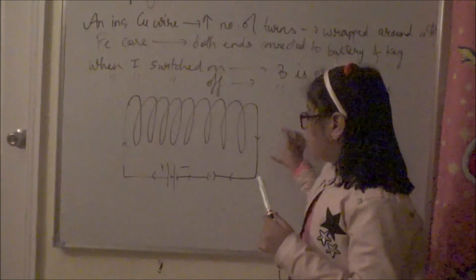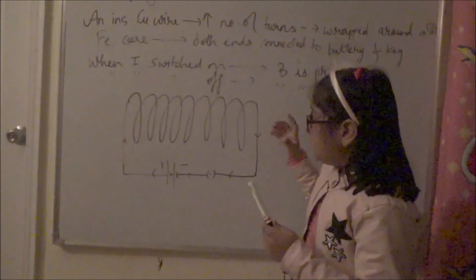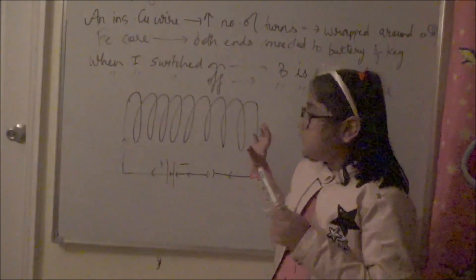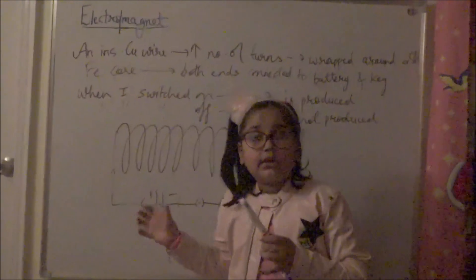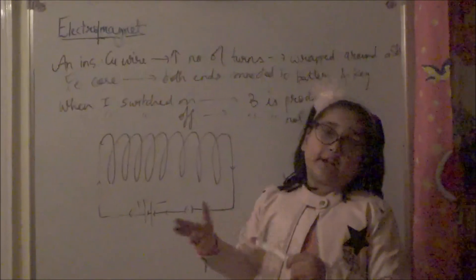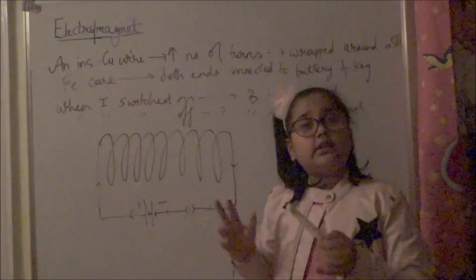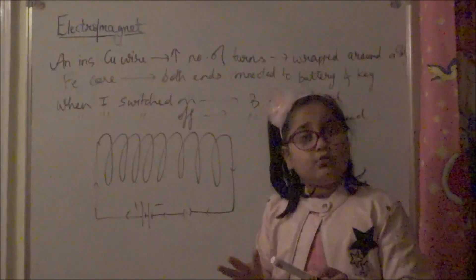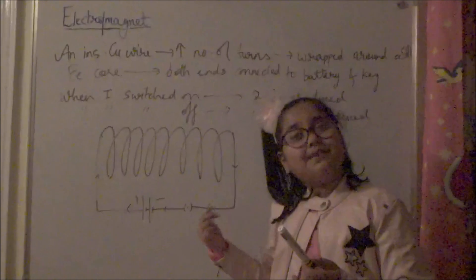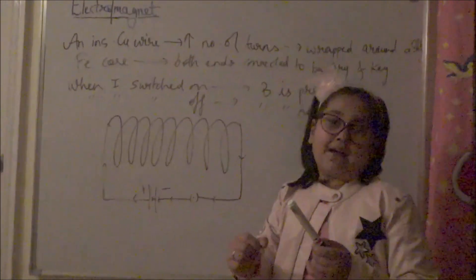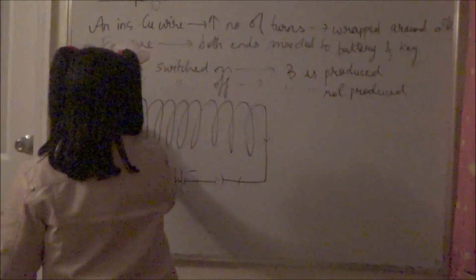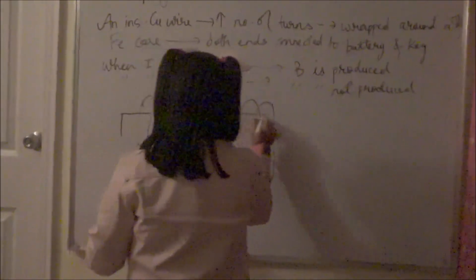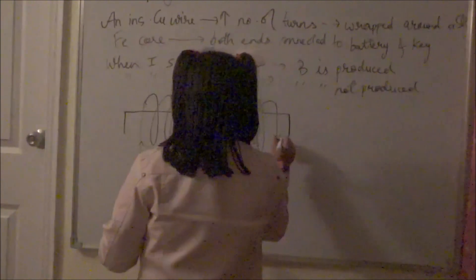If I insert a soft iron core inside the solenoid, it becomes a strong electromagnet. If I use a steel core instead, it becomes a permanent magnet.